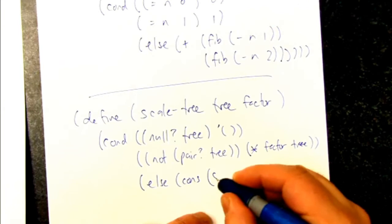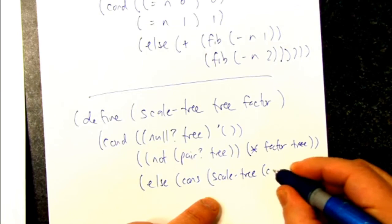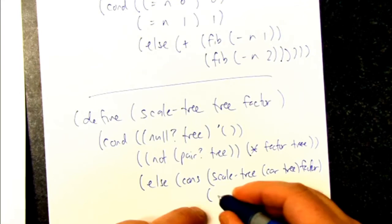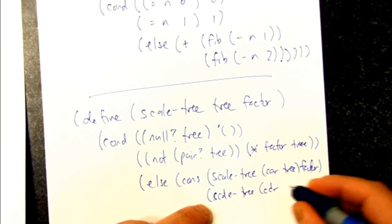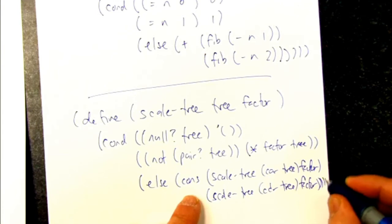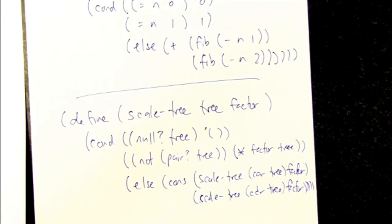So on the car of the tree and handing in the factor again. And scale tree on the cutter and factor and then all the close parens. So this one unpacks a tree with a double recursion and then rebuilds it up.